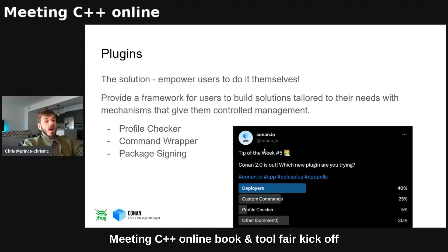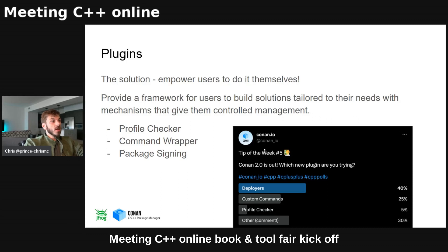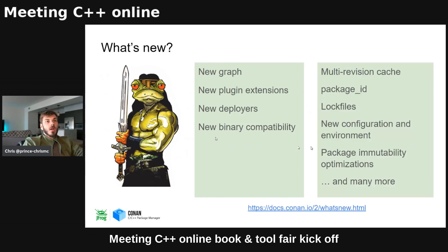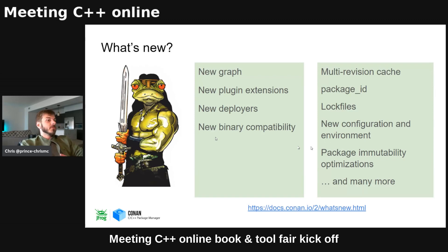I mentioned plugins. In Diego's CppCon talk he used the expression 'death by a thousand bytes' — and that's absolutely true. One of the changes in Conan 2.0 is you have the power to help yourself: there's a profile checker, command wrapper, and package signing. New in 2.0: new graph model, new plugins, extensions, deployers, binary compatibility, multi-revision cache, new package ID modes, lock files got a huge revamp, configurations and environments got an overhaul, package immutability, and much more. There's a 'what's new' page on the docs where you can learn all about it.